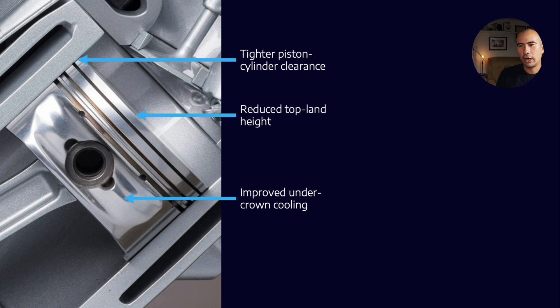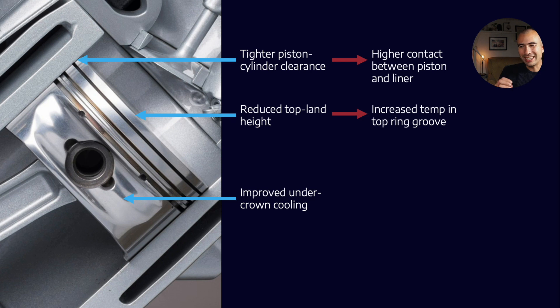Now, what does this mean? If we have a tighter piston to cylinder clearance, that's going to result in potentially more contact events between the piston and the liner. When we reduce the top land height, we're going to increase the temperature in the top ring groove, because it's closer to the combustion chamber. And finally, if we improve the under-crown cooling, then we are going to have higher oil temperatures because you're removing more heat through into the oil system. That has to be distributed through all the oil that eventually ends up in the sump.